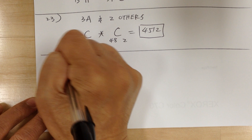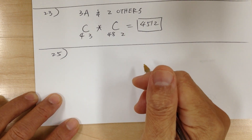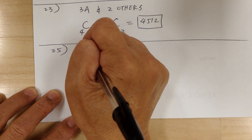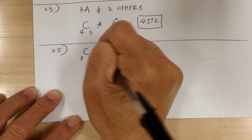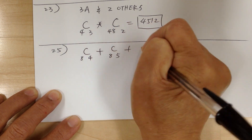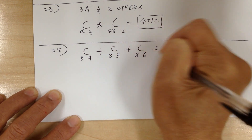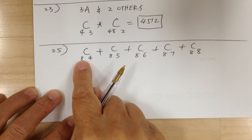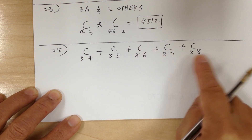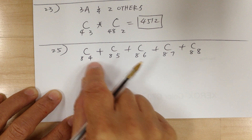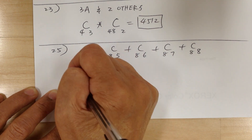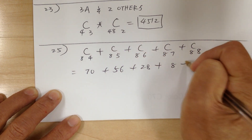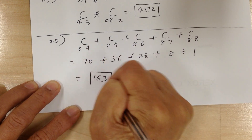Number 25: how many ways can four or more students be selected from eight students? You want to select four or more, so that means groups of four, five, six, seven, or eight. That's 8C4 + 8C5 + 8C6 + 8C7 + 8C8, which equals 70 + 56 + 28 + 8 + 1, giving you 163.